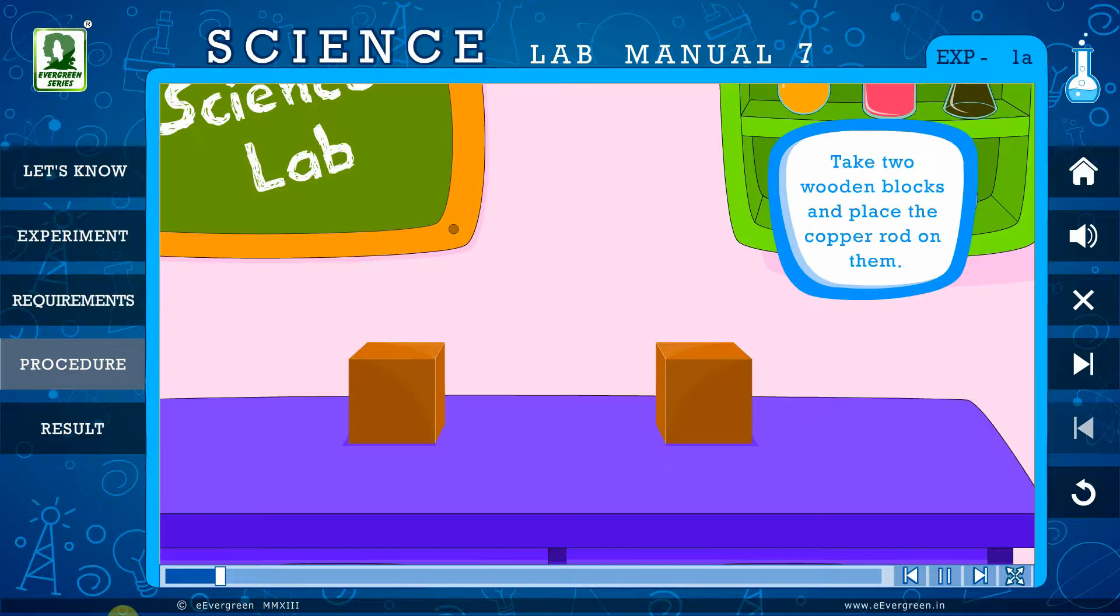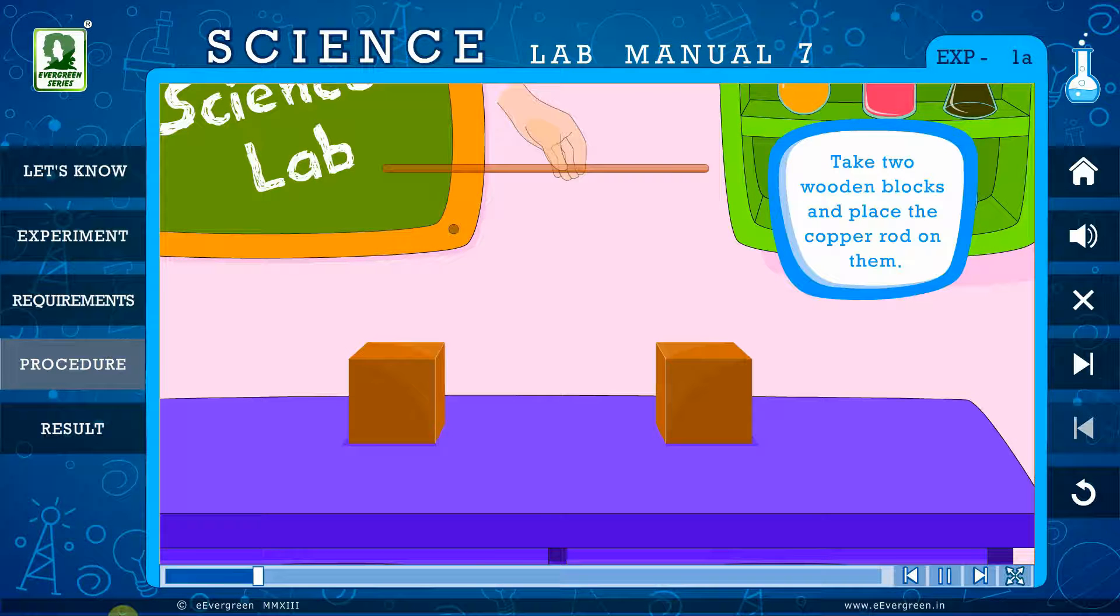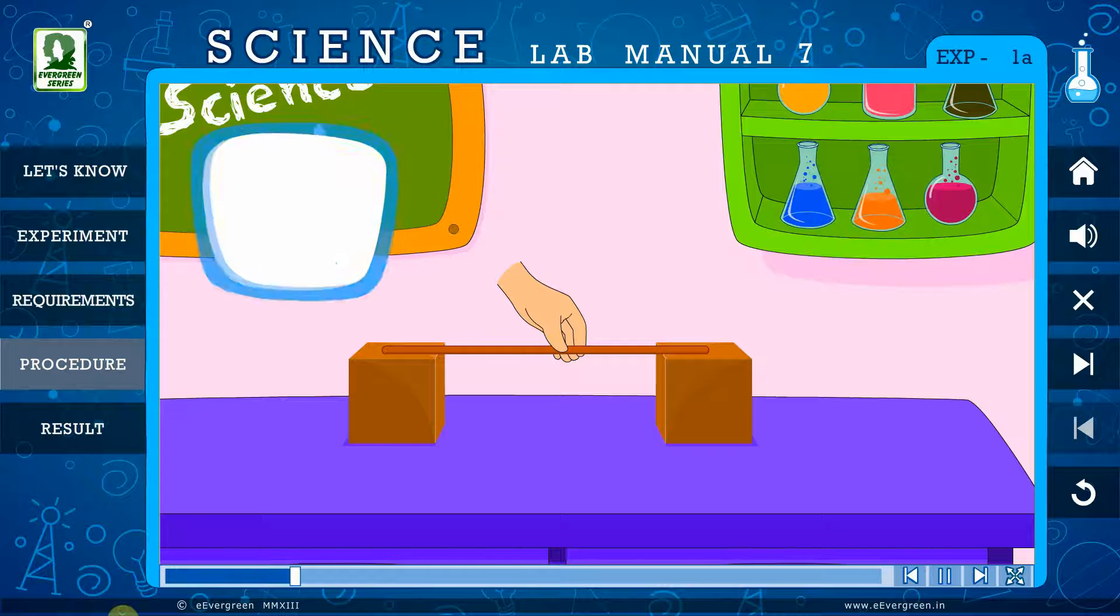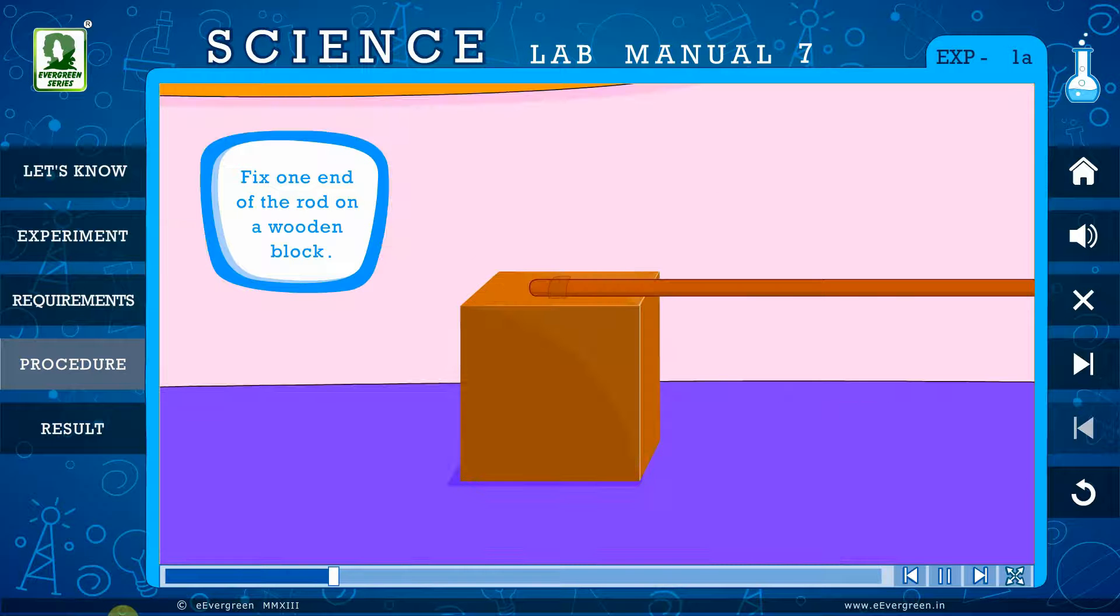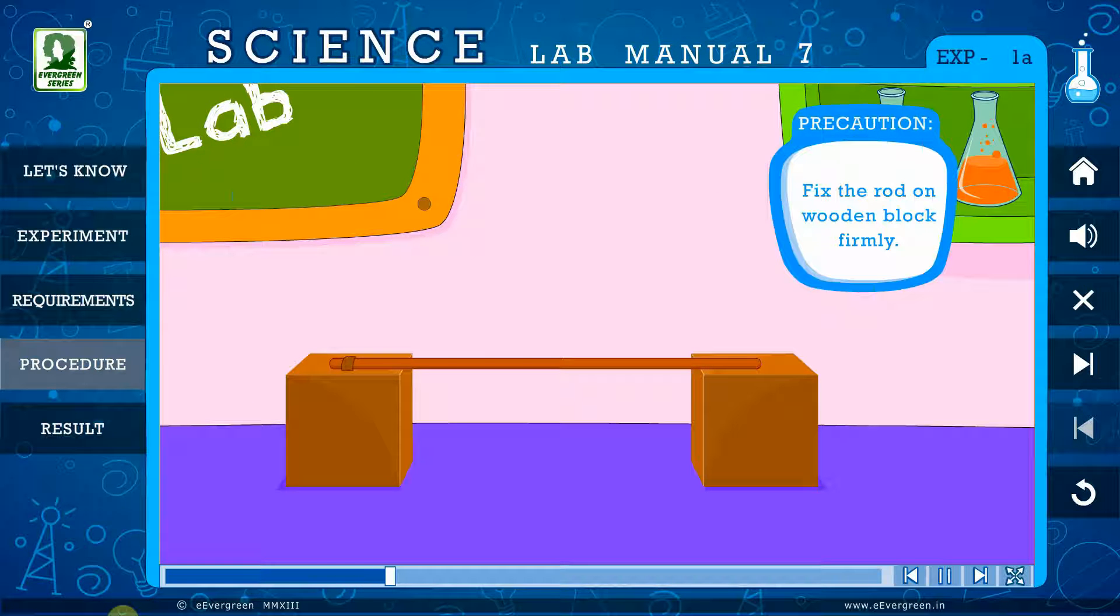Procedure: Take two wooden blocks and place the copper rod on them. Fix one end of the rod on a wooden block. Precaution: Fix the rod on a wooden block firmly.